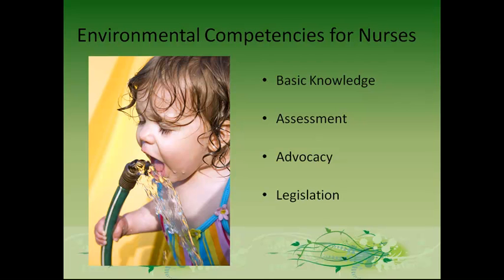Competencies for nurses with environmental issues include basic knowledge — understanding the relationship between people and the environment, like the community water source. Assessment involves recognizing key environmental problems and providing appropriate referrals, for example identifying what could contaminate the water source. Advocacy means acting as a population advocate, such as urging water suppliers to test often and adhere to EPA guidelines. Legislation involves understanding policies and major pieces of legislation, like supporting local and state efforts for programs and education.